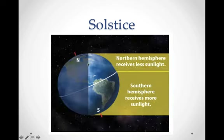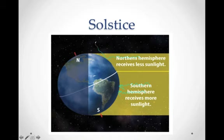The opposite is true when the southern hemisphere is pointed towards the sun. Now the southern hemisphere receives all the direct radiation, while the northern hemisphere gets indirect sunlight hitting at more of an angle and bouncing off. That's because the southern axis is pointed towards the sun, causing southern hemisphere summer.